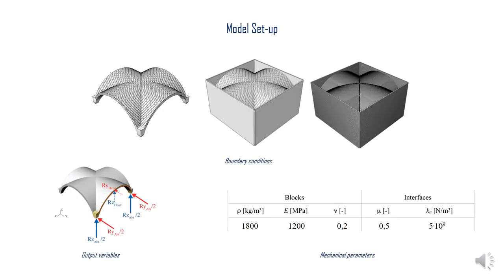Regarding the model setup, all nodes at the abutments are pinned, resulting in a fixed support. In order to confine the web edges, vertical walls adjacent to the head arches are modeled as solid plates of 30 mm in thickness, whose nodes are all pinned. The walls are subjected to gravitational load only. The finite elements used for the bricks are linear hexahedra of 3 cm in size.